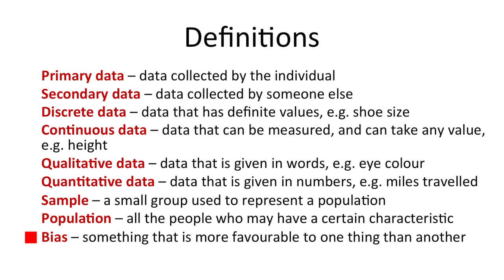Bias is something that is more favourable to one thing than another. For example, it could be a question that would only generate a certain response — perhaps more positive rather than negative — and that would be said to be biased.